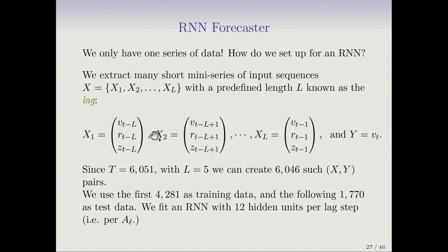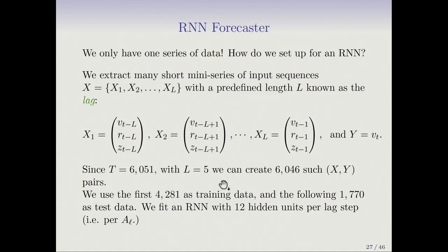You get these five three-vectors starting at time T; if you go to a different time, you get a different set of three vectors. So the number of observations equals the number of time points, and the features are lagged versions of the three series. We have 6,051 trading days, and with L equals five we can create 6,046 such (X, Y) pairs — slightly less because at the very beginning we can't lag back. We use the first 4,281 as training data and the following 1,770 as test data.